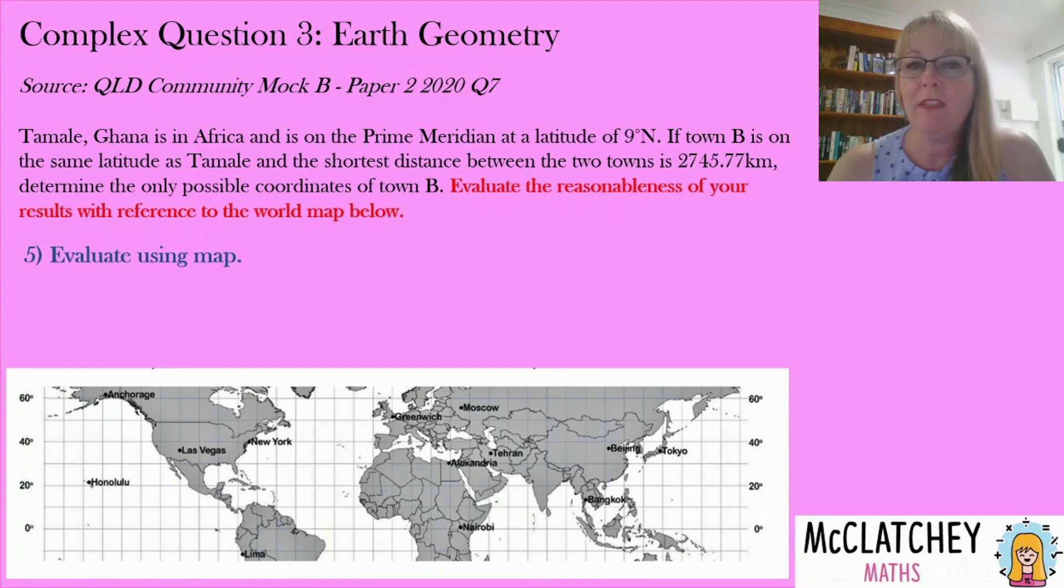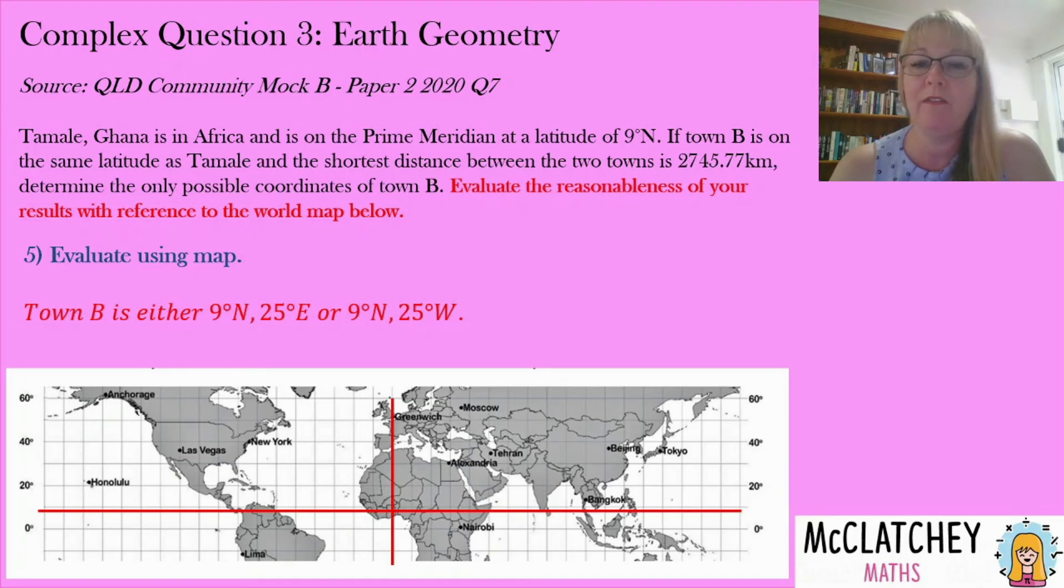So now we're going to evaluate that using our map. Well let's put Tamale back on the map and town B is either going to be 25 degrees to the east or 25 degrees to the west. And this is important that you've got those abilities to read your maps. Now we know from what's going on with our latitude going up that each of those lines is representing 10 degrees. And we know that that red line that's vertical is the prime meridian. So that's zero. So moving one square over to the left or one square to the right is going to be 10 degrees each time.